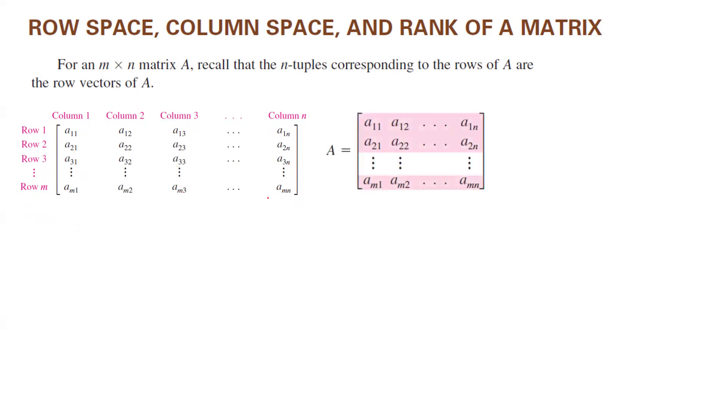You can take each row and define a vector. So row vectors of matrix A includes the first row, a sub 1 and 1, a sub 1 and 2, and a sub 1 and n. The second row or the second vector is a sub 2 and 1, a sub 2 and 2, a sub 2 and n. And finally, you can continue this process. Write down the last vector or last row as a sub m and 1, a sub m and 2, and a sub m and n. We saw this before.